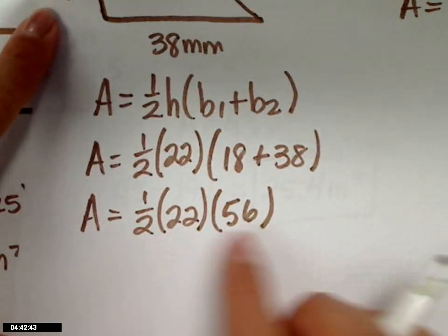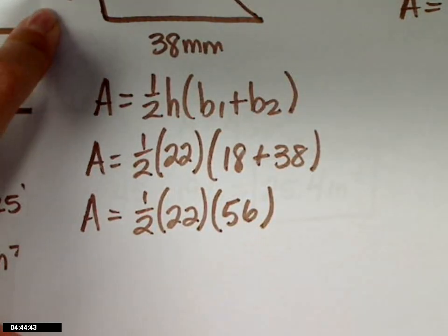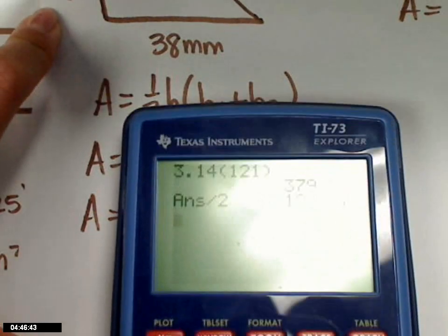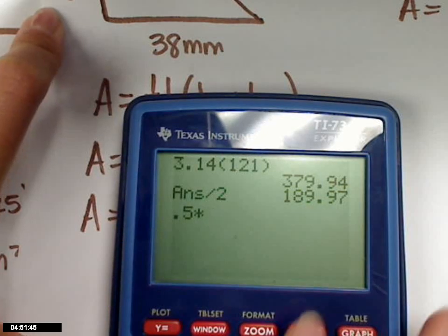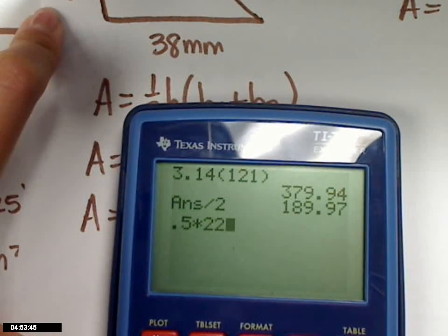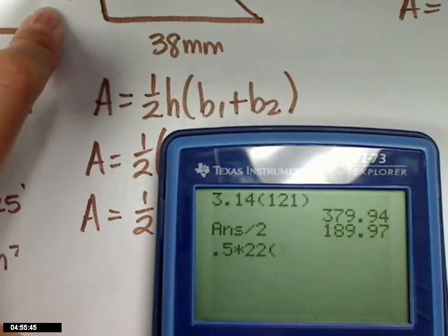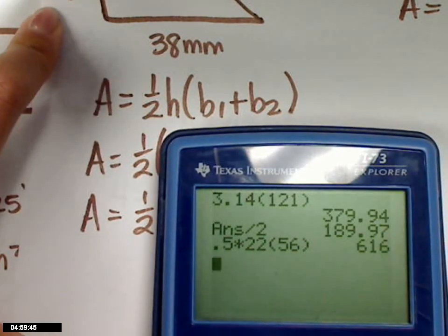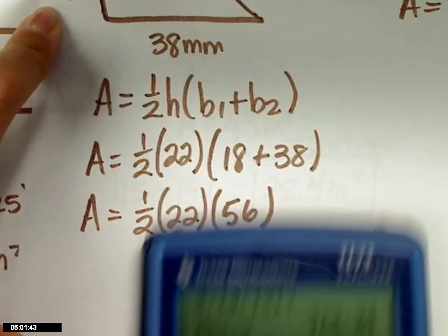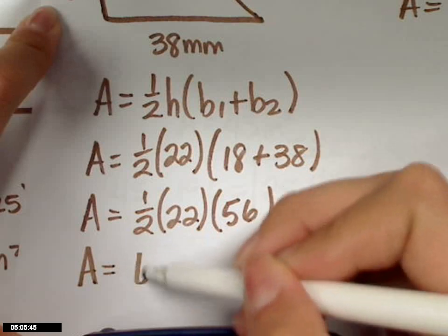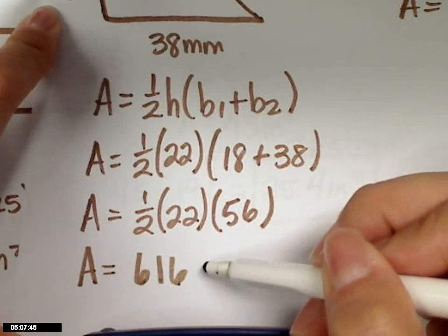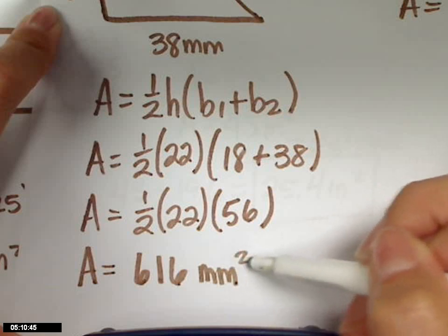Now, can I do this in whatever order I want? Yes, I sure can. And since I've got a calculator, I'm going to go ahead and do half times 22 times 56. I got 616. My units are millimeters squared.